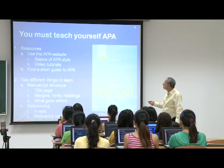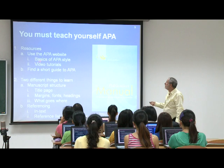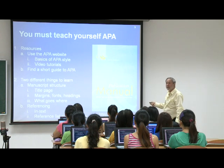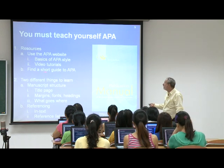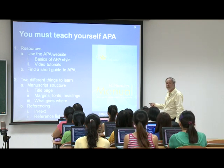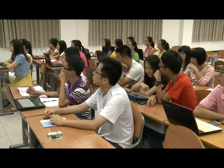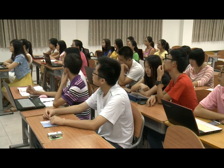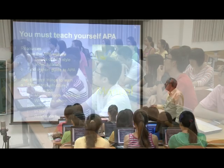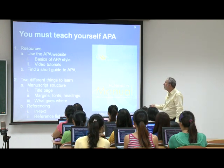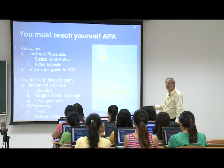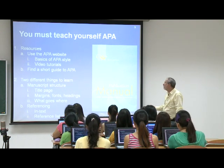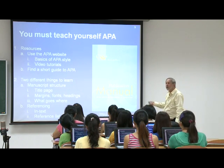The resources you have include the APA website, which has two parts: the basics of APA style and their video tutorials — about eight or nine of them, of which five or six are most important. Also find somewhere on the internet — in English or Chinese — a short two-page guide to APA. There are dozens if not hundreds of them; find one you can read and like and keep it handy. When you learn APA, there are two different things: first, the structure of manuscripts — how to set up a title page, margins, fonts, headings, and what goes where.